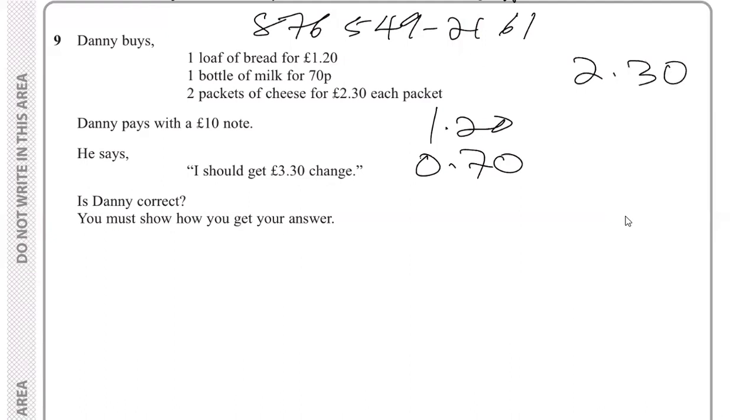So 2.30 multiplied by two. Two times three is six, two times two is four, so that's 4.60. Let's check the total now.